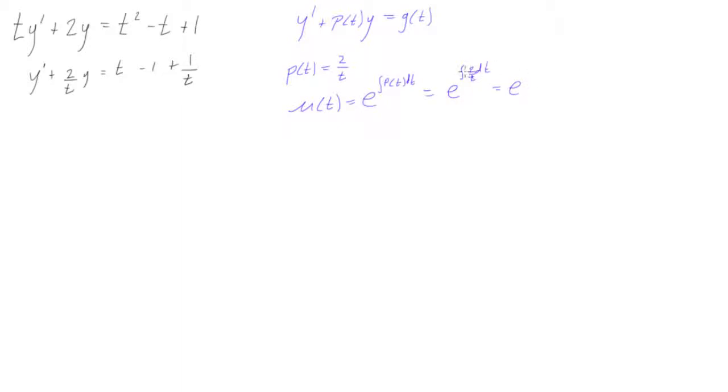Okay, so then we can continue this on. E is equal to, well, the integral of 2 over t is going to be 2 ln of t. Okay, and this becomes, well, we can also rewrite this according to log rules. We'd have e to the ln of t all squared.